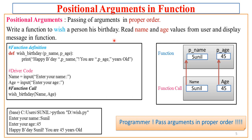Now let us see the next argument type: positional arguments — passing arguments in proper order. We will use a fantastic example: write a function to wish a person happy birthday. You need to read name and age values from the user and display a birthday greeting message inside the function. Analyzing the problem, we need to give a meaningful name to the function and identify two arguments: name and age.